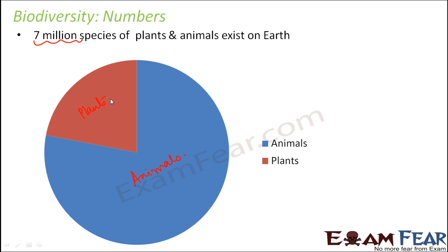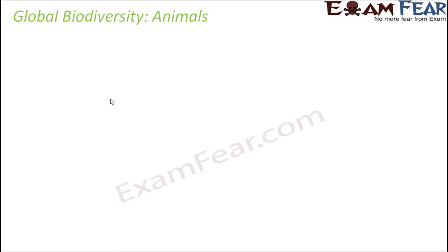When we say plants, that includes algae, fungi, gymnosperms, and angiosperms. When we talk about animals, that includes insects, mammals, reptiles, amphibians, fishes, and mollusks. More than 70% of species are animals. We will now look at the numbers for plants and animals separately, starting with animals since they are present in greater numbers.